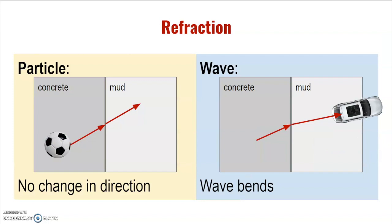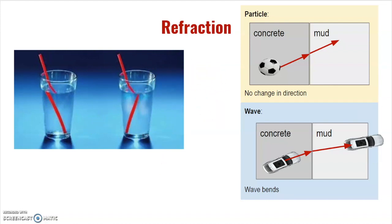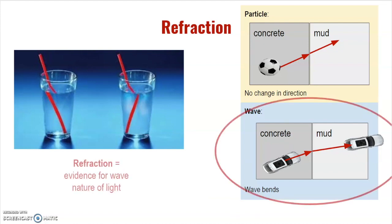A classic example of refraction of light is a straw in a cup of water. We can clearly see the straw does not appear to go straight through — if light were a particle we'd see a straight straw, but instead we see the straw appearing split, magnified in the water, with the other end going in a different direction. Because the light is bending or changing direction, refraction provides evidence for the wave nature of light.